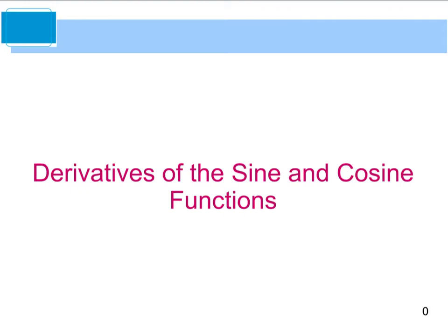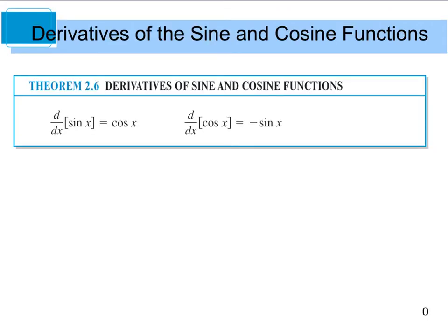Next, we're going to look at the derivatives of sine and cosine — two derivatives you are going to have to know and memorize. The derivative of sine is cosine, and the derivative of cosine is the opposite of sine, or negative sine.